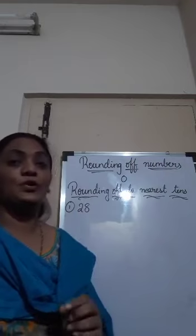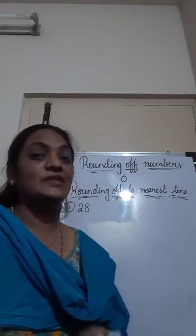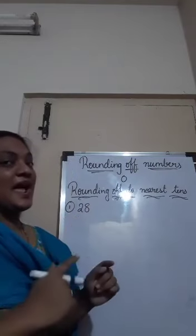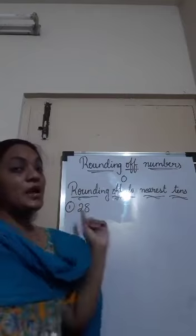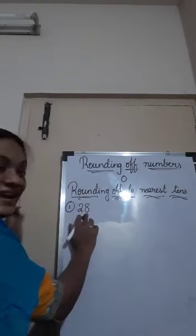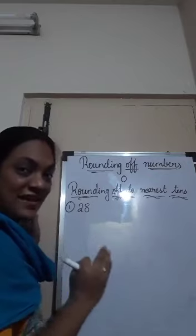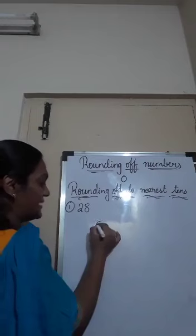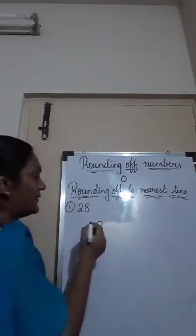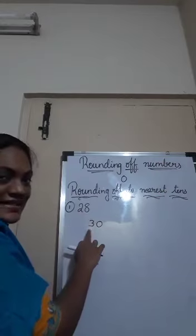And suppose in the ones place you have 5, 6, 7, 8, or 9 — the ones place will become 0 and you will add 1 to the tens place. That means 2 plus 1 equals 3. So now we have 8 in the ones place, so rule number 2 applies: ones place becomes 0 and tens place becomes 2 plus 1 equals 3. So 28 rounded off to the nearest 10 is 30.